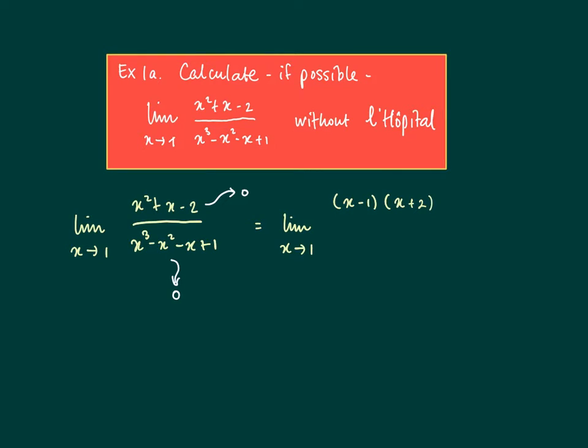This gives the following expression. Above we see x minus 1, x plus 2 in the numerator, and in the denominator we get x minus 1 times x squared minus 1. So x minus 1 cancels out.